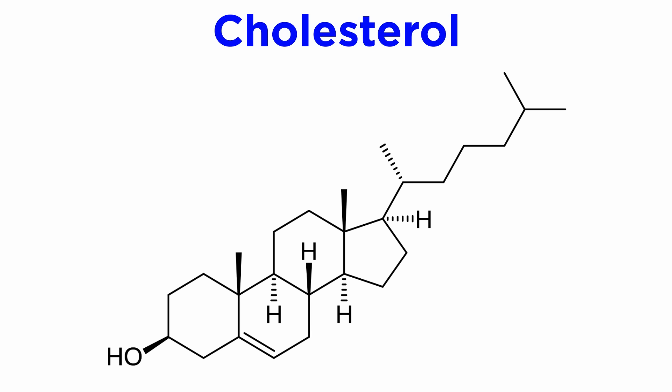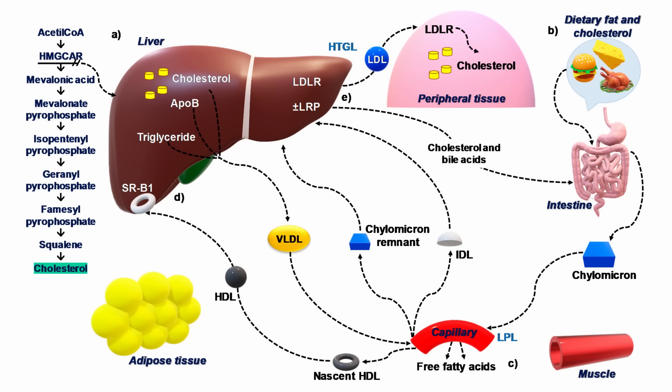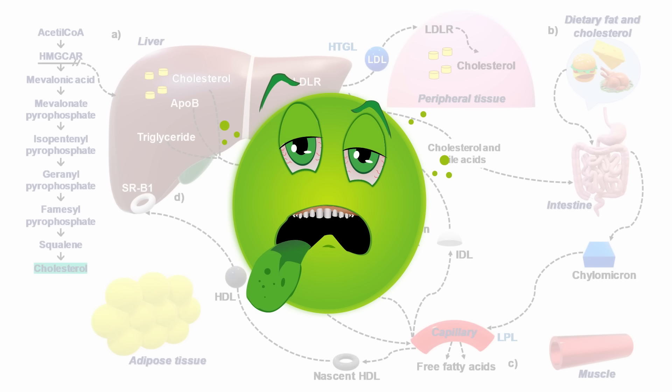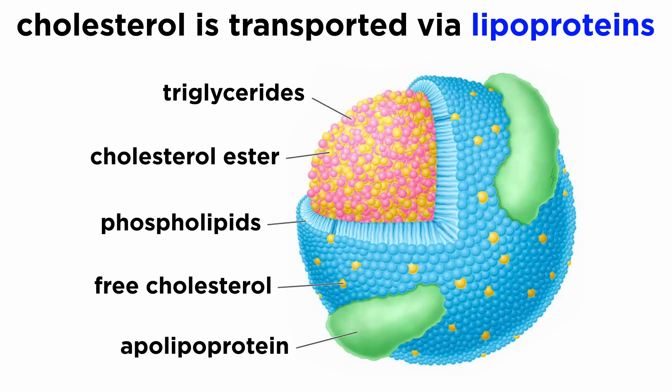Now that we understand some of the roles of cholesterol, it's important to understand how cholesterol biology is regulated and how unregulated cholesterol biology can become pathological. Because cholesterol is a relatively large molecule and also very hydrophobic, it is transported around the body in the form of lipoproteins, which are produced in the liver. These macromolecules are generally structured with a phospholipid external coat, with free cholesterol between the phospholipids and a core consisting of triglycerides and cholesterol esters.